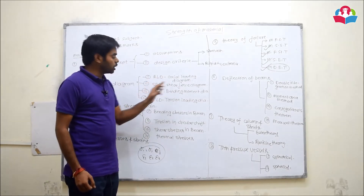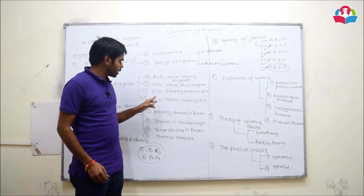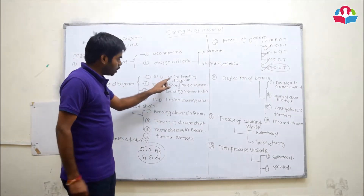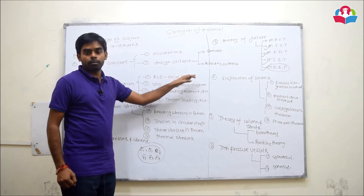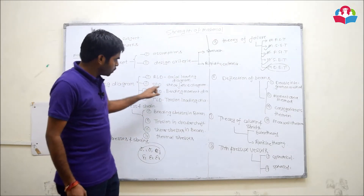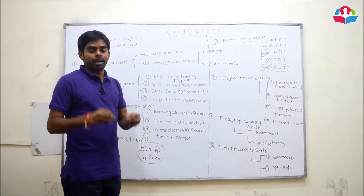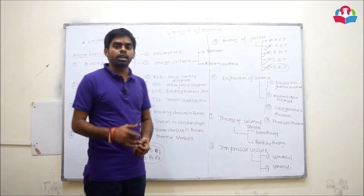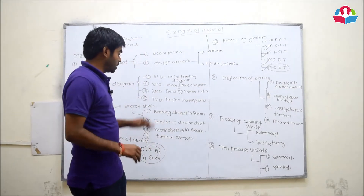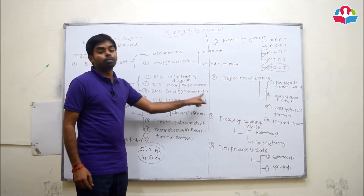The first is the axial loading diagram, the second is the shear force diagram, the third is the bending moment diagram, and the fourth is the torque loading diagram. In the axial loading diagram, we draw for horizontal reactions and action forces. In the shear force diagram, we represent only the vertical reactions. The bending moment diagram represents the bending moment introduced because of eccentric axial loading conditions.